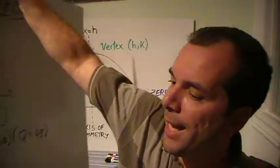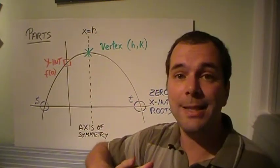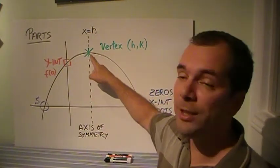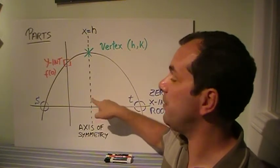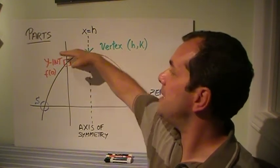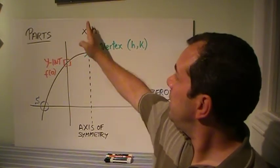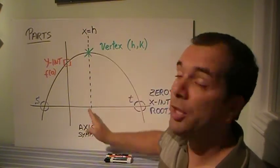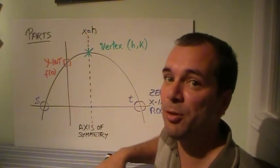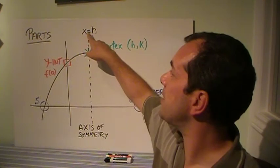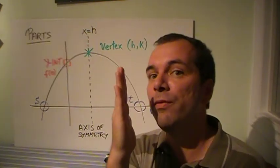The parabola has some major parts to it, and one of the major things is the vertex. The vertex is denoted h and k, because h is the x of the vertex and k is the y of the vertex. The h is where there's a vertical line that divides the parabola into two equal halves, and that's called the axis of symmetry. Therefore it has the equation x equals h, because x equals something gives you the equation of a vertical line.